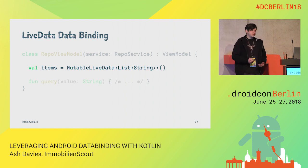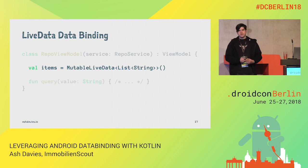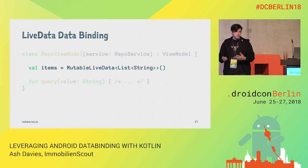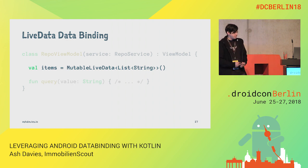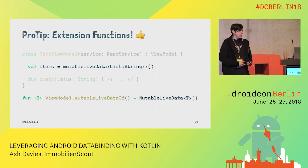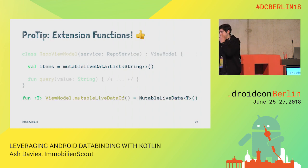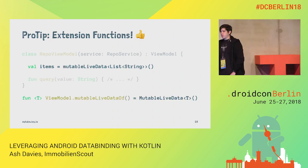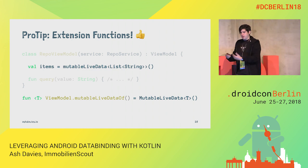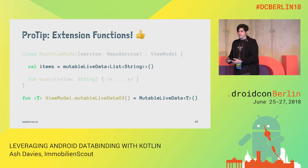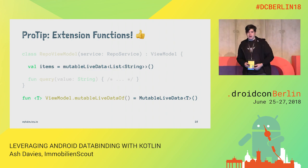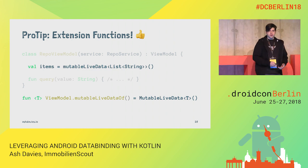LiveData also provides additional benefits like transformations, switchMap, and lifecycle owner observation. You can also use an extension function to instantiate this in a similar way that you might instantiate a mutableListOf, or listOf, or hashMapOf — just the little things that make your code a little bit more readable, concise, and consistent.